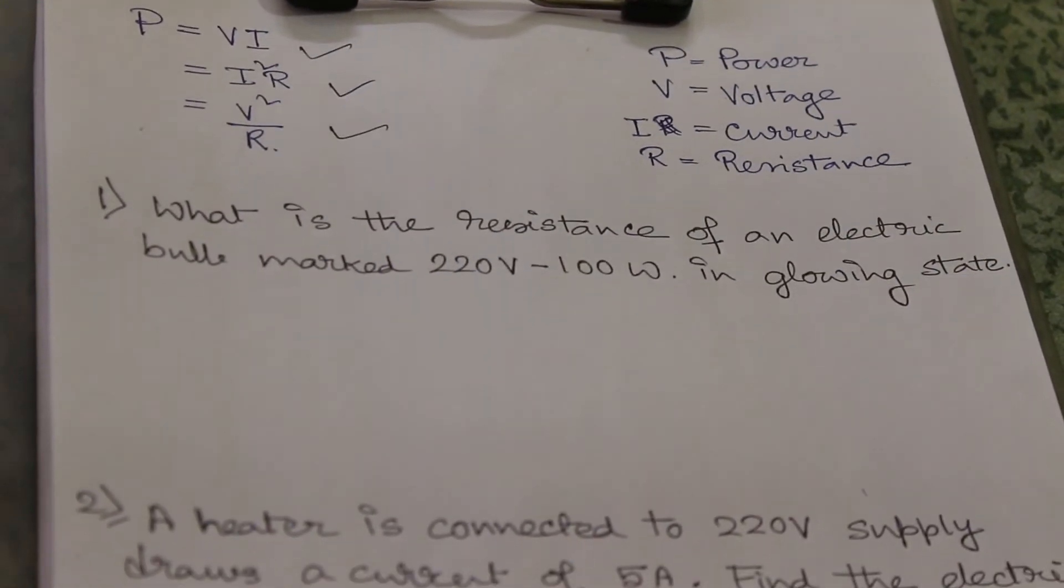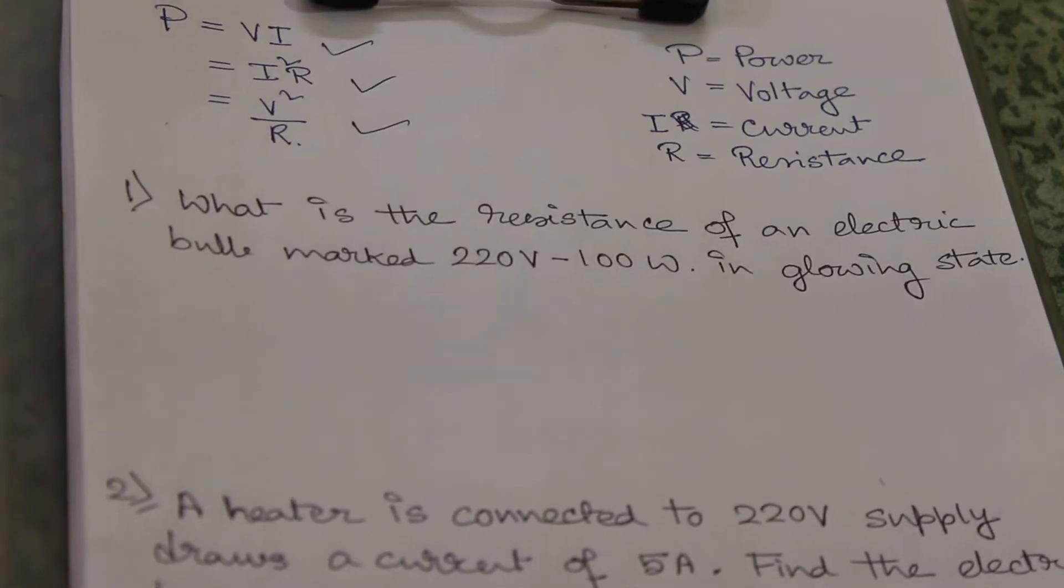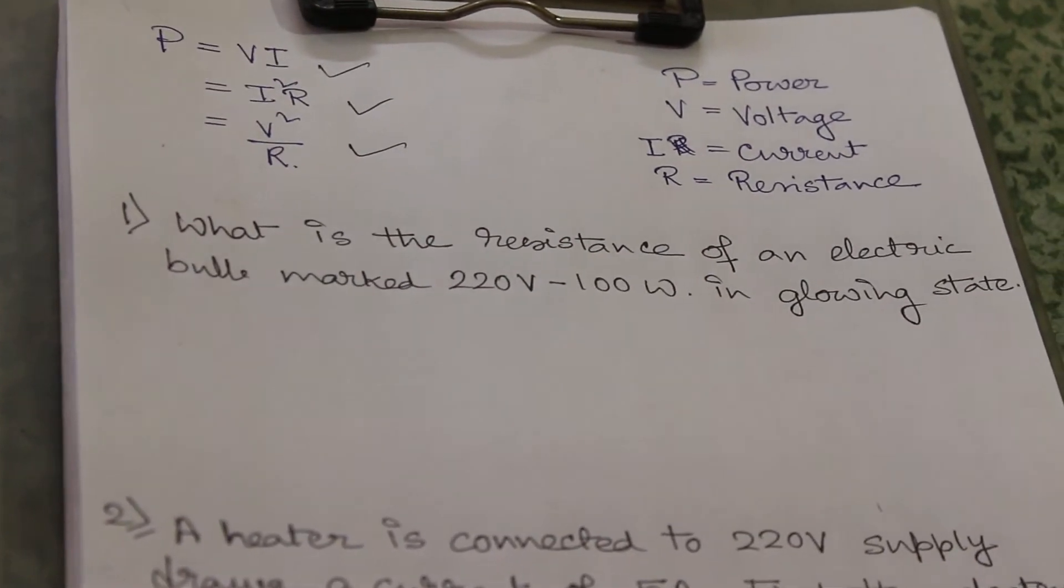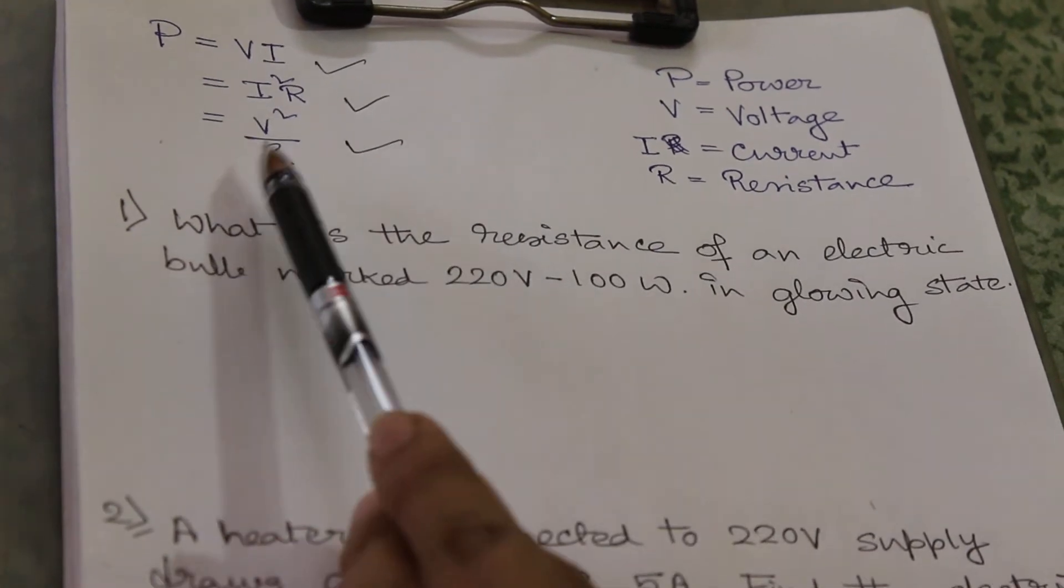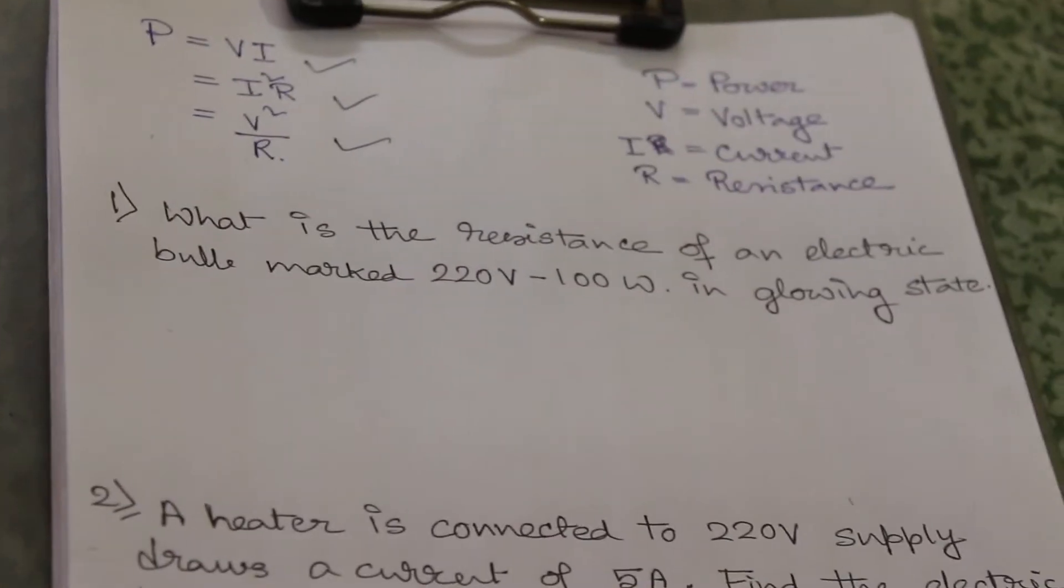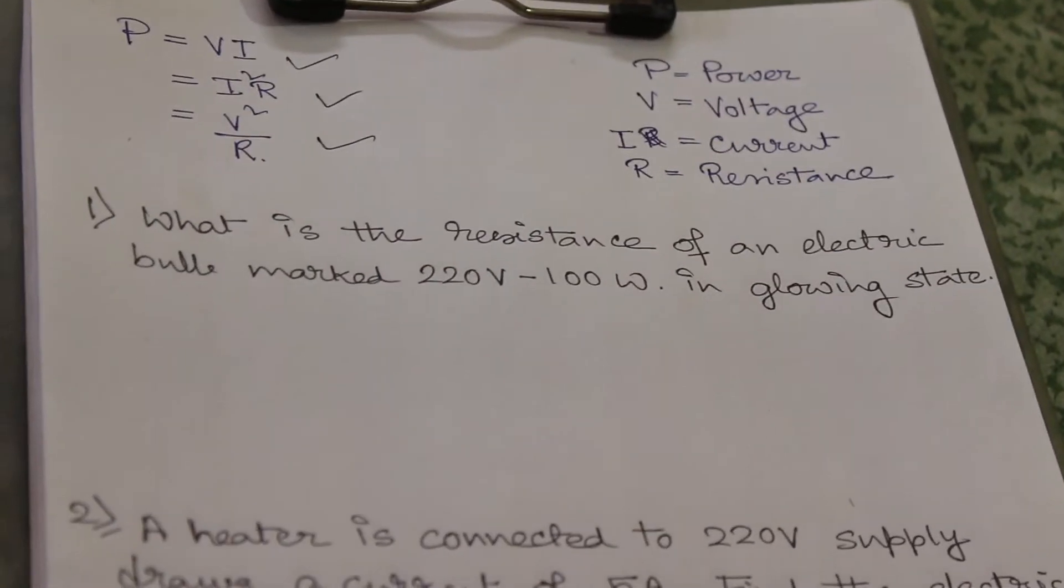Mostly in series connection we use power equal to I square R, and in parallel connection we use power equal to V square by R. Keep this in mind. So let's start explaining this with some examples.